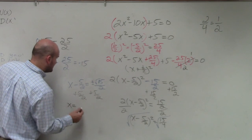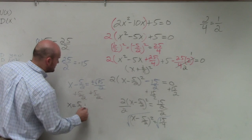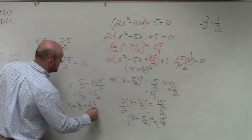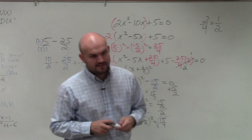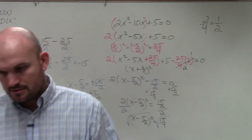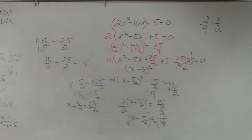And then I just add 5 halves to both sides. So therefore, x equals 5 halves plus or minus the square root of 15 over 2. And that would be your finalized answer. Whoa, that's kind of crazy, Mr. McGlogan.